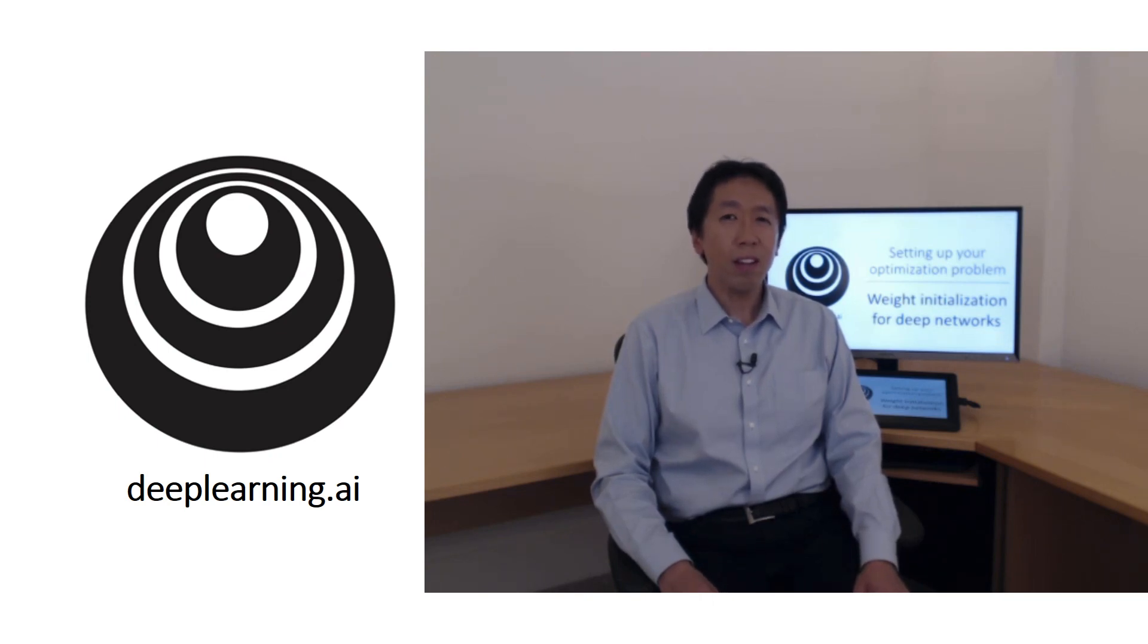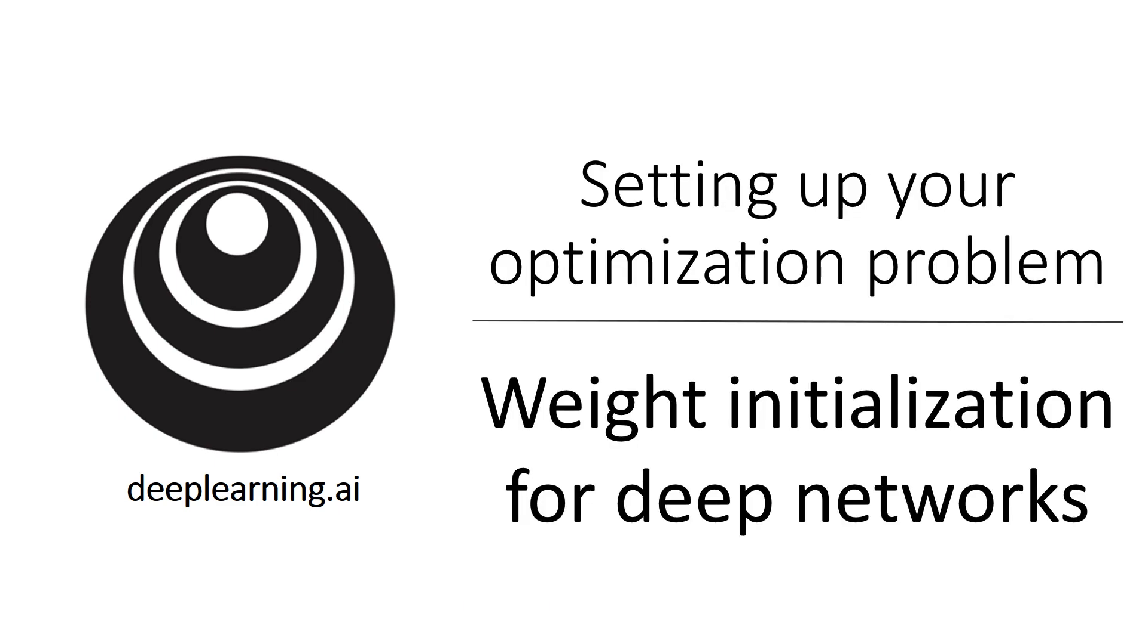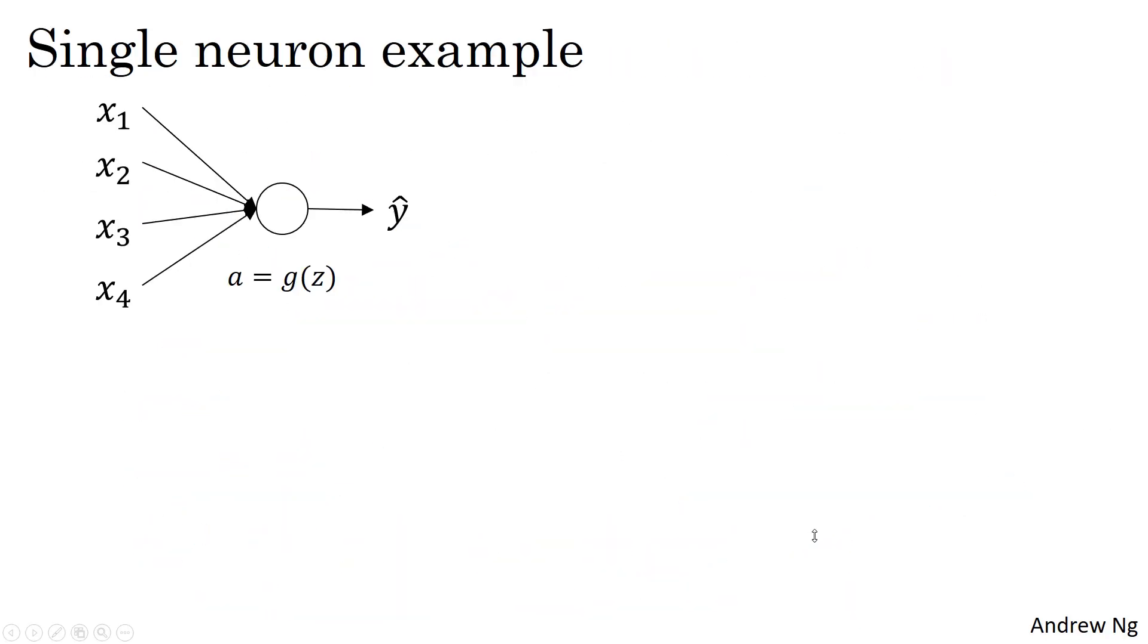To understand this, let's start with the example of initializing the weights for a single neuron and then we'll generalize this to a deep network. So the single neuron, you might input four features x1 through x4, and then you have some a equals g of z, and it outputs some y.